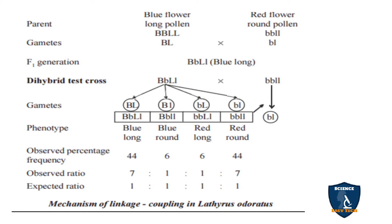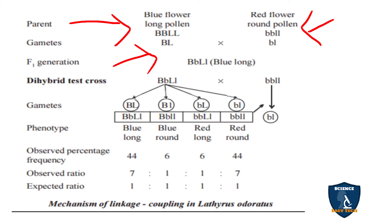This is a simple flowchart without chromosome diagrams you can use in your exam. Instead of purple flower, we are going to use blue flower long pollen crossed with red flower round pollen: BBLL crossed with bbll. The gametes are formed as BL and bl. In F1 generation you get the heterozygous condition of blue long, that is capital B small b, capital L small l. This F1 hybrid is going to cross with the recessive parent red round.